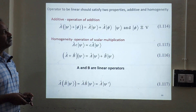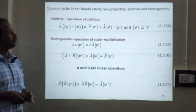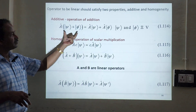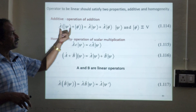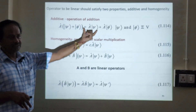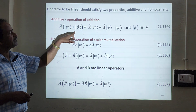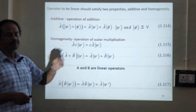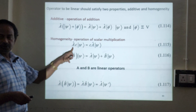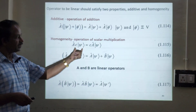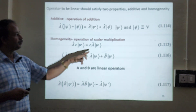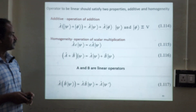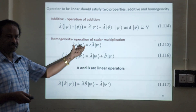So an operator to be linear should satisfy two properties: additive and homogeneity. One is additive — additive means operation of addition. So operator A operates on two wave functions will give you the individual answers. This is the additive property. Another one is homogeneity — operation of scalar multiplication. So operator A operates on any scalar times psi: the scalar C can be pulled out, so you can write C times A operating on wave function psi.